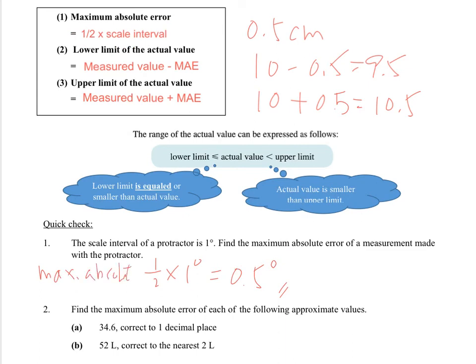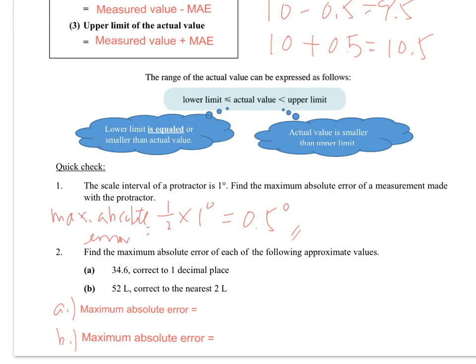So for part 2 here, find the maximum absolute error for this number. So maximum absolute error only counts with the scale interval, right? But this time, do we need to concern about how much we calculate? I don't think so. We just count for the scale interval, which is 1 decimal place. So it means 1 decimal place, 0.1 would be our scale interval.